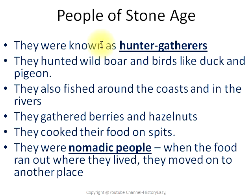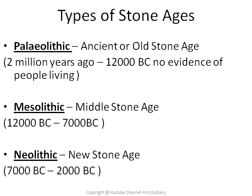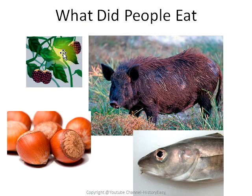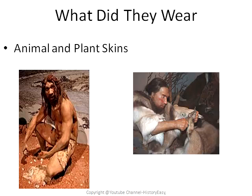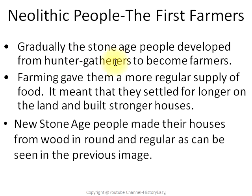These people ate berries, wild boar, hazelnuts, and fish. They wore animal and plant skins. Neolithic people, the New Stone Age people, are also called the first farmers. Gradually, Stone Age people developed from hunter-gatherers to become farmers.